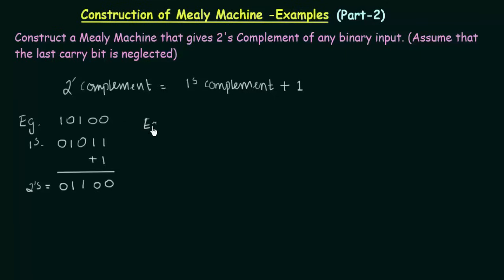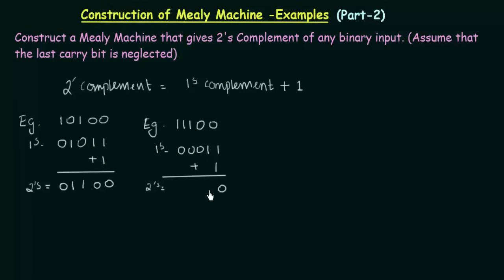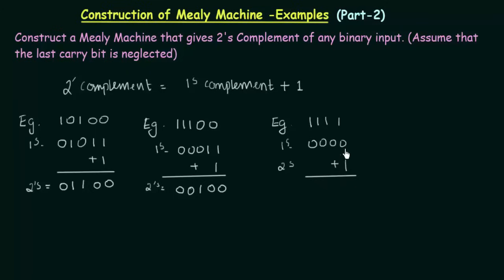Let's take another example: 1 1 1 0 0. The 1's complement is 0 0 0 1 1, and adding 1 for the 2's complement: 1 plus 1 is 0 carry 1, carry plus 1 gives 0 carry 1, carry plus 0 gives 1, then 0 and 0. So the 2's complement is 0 0 1 0 0. One more example: 1 1 1 1. The 1's complement is 0 0 0 0, and adding 1 gives 0 0 0 1. So the 2's complement is 0 0 0 1.